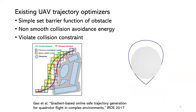There are several existing UAV trajectory optimization methods to deal with this problem. One method simply sets a barrier function on obstacles. However, their method is not smooth and not easy to optimize. As the left picture shows, they use distances from voxel to voxel as input to the barrier function — it's not smooth. Additionally, the weak collision constraint means their trajectory, as the red picture shows, has penetration with the obstacle.